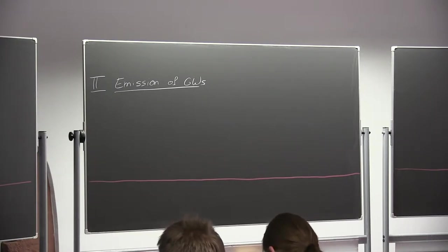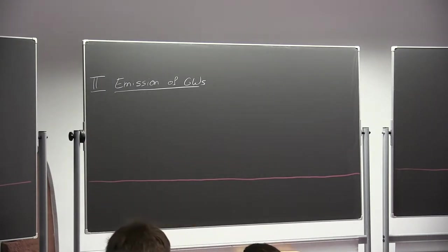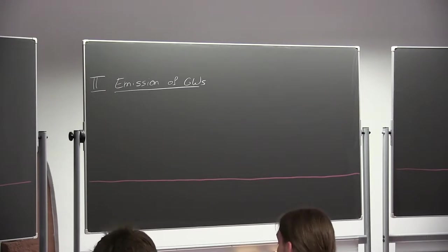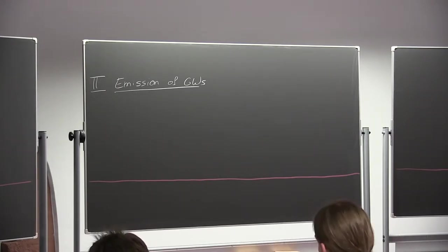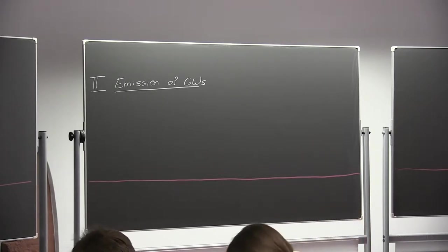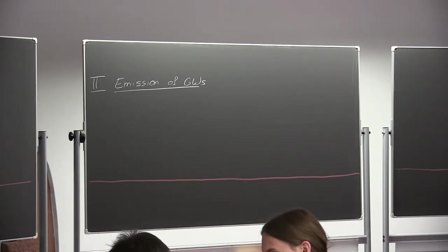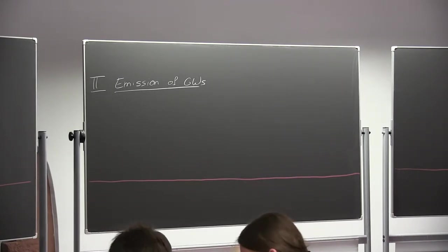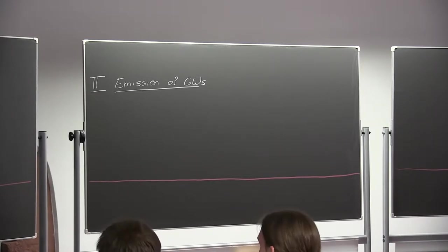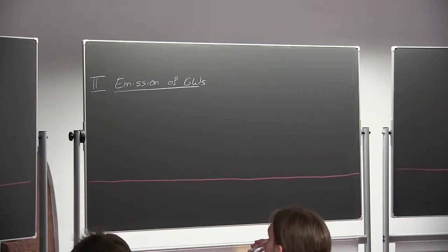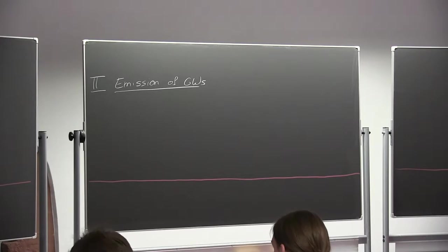I wanted to start by briefly recapping what we did last time. The key equation we got was the wave equation for gravitational waves: the box operator acting on the gravitational wave is given by the energy-momentum tensor. If we are in vacuum, far outside the source, this goes to zero and we just have free propagation of the gravitational wave.